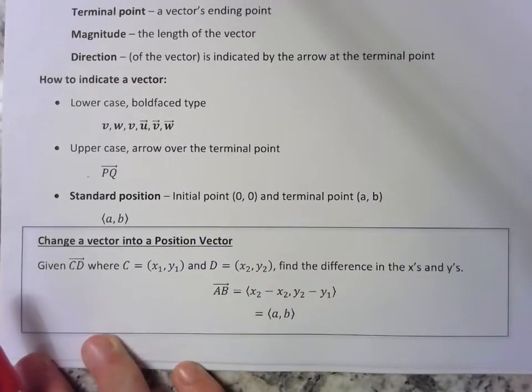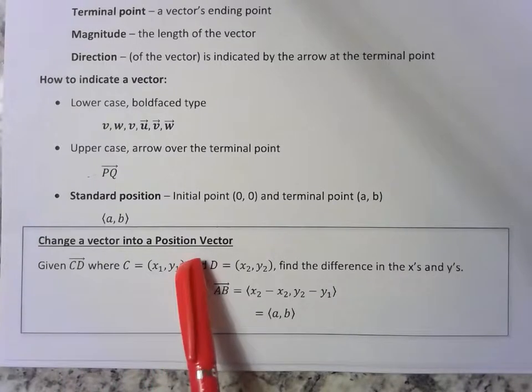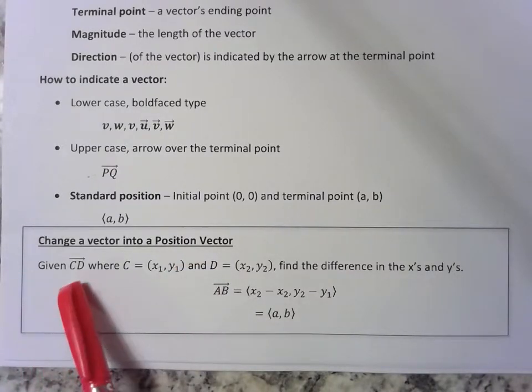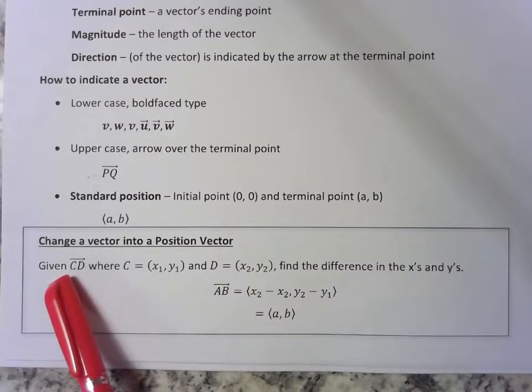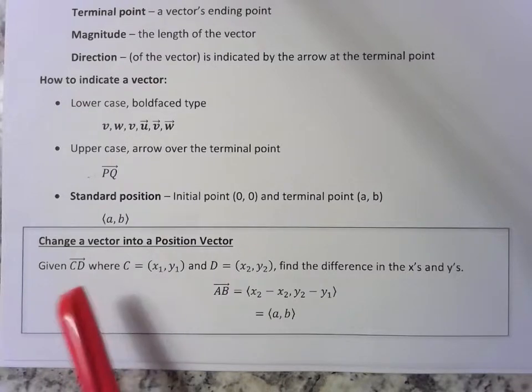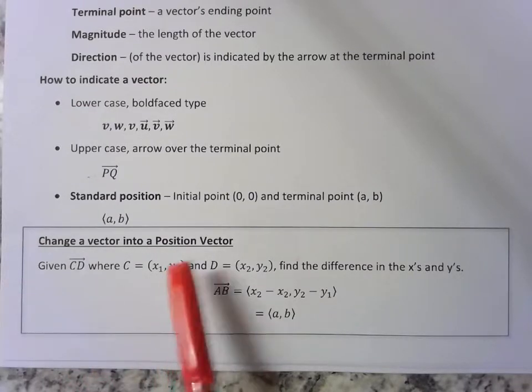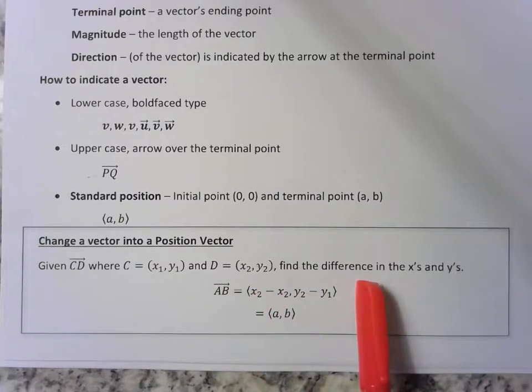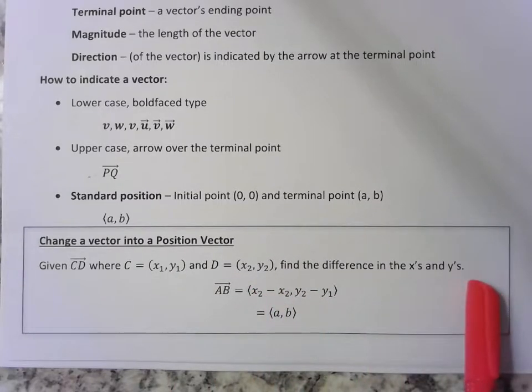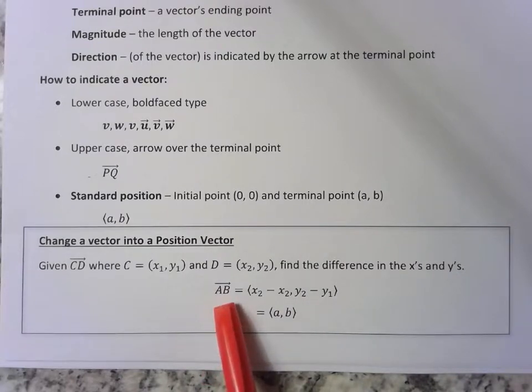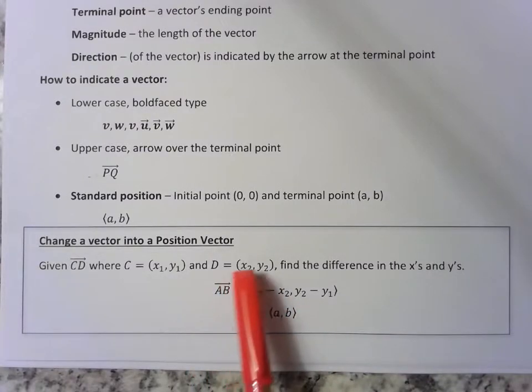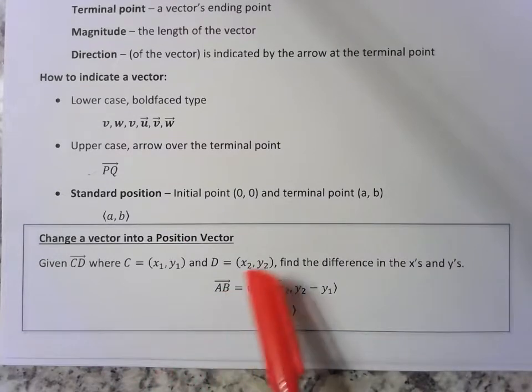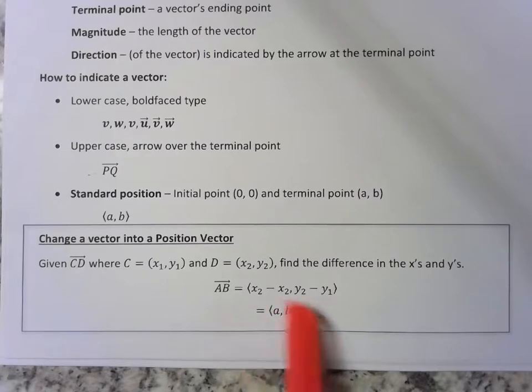If you want to change a vector into a position vector, you're given vector CD. C is the initial point, D is the terminal point. C is the pair (x₁, y₁), D is the pair (x₂, y₂). You find the difference in the x's, find the difference in the y's. So vector AB would be the difference in the x's, x₂ minus x₁, and the difference in the y's, y₂ minus y₁. And that's how you get your vector AB.